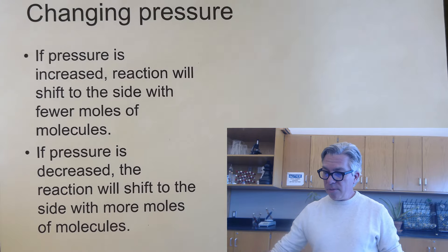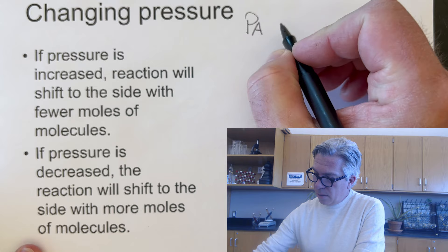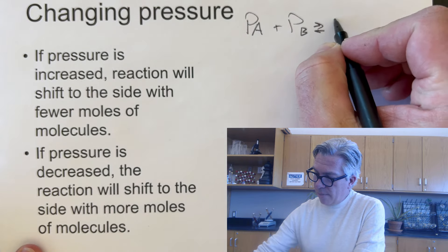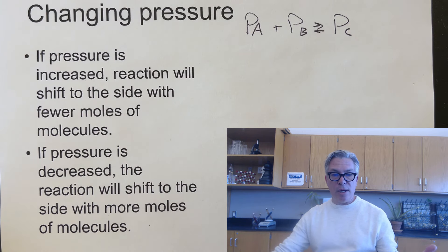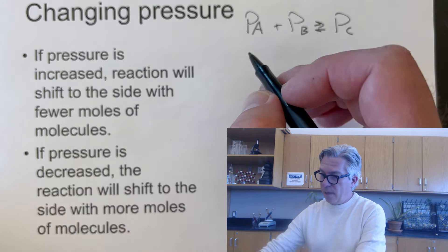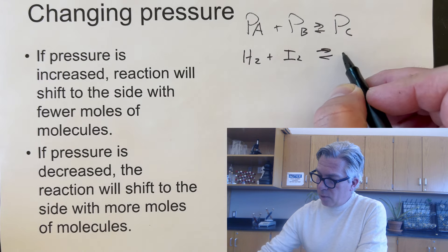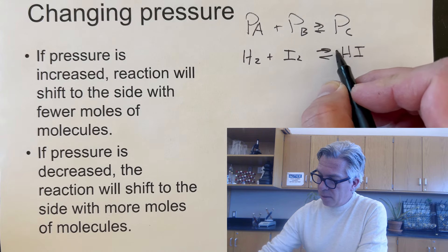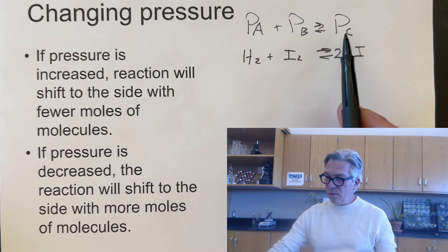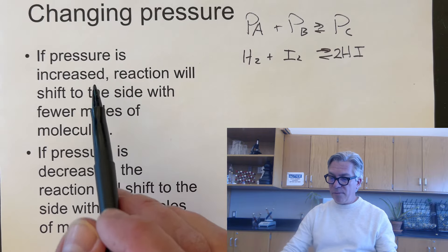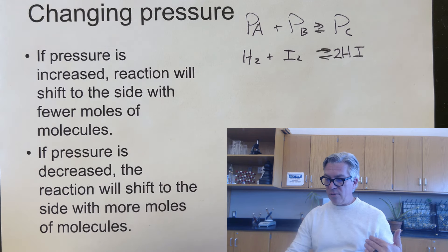What happens to an equilibrium system if we change the pressure? The system will respond to alleviate the pressure change. If pressure is increased, the reaction shifts to the side with fewer moles of gas molecules. If pressure is decreased, the reaction shifts to the side with more molecules.